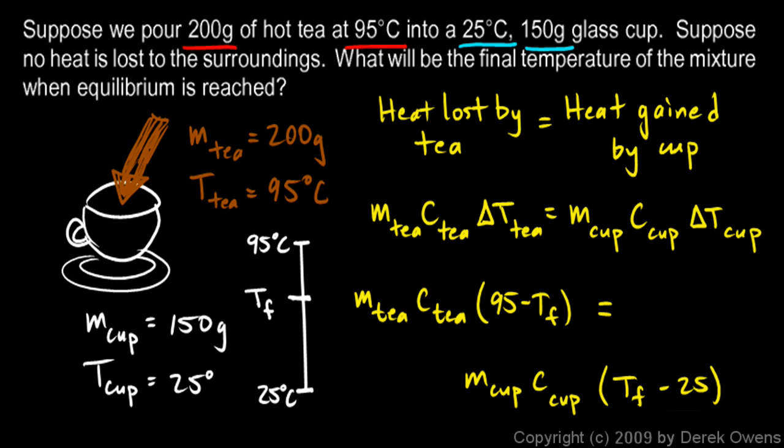The way I'm doing this, I set this up so that this is always a positive number, and that's always a positive number. And to do that, you need the high number minus the low number. For the change in T of the tea, the high number is 95, and the low number is TF. So this comes out to be a positive number.